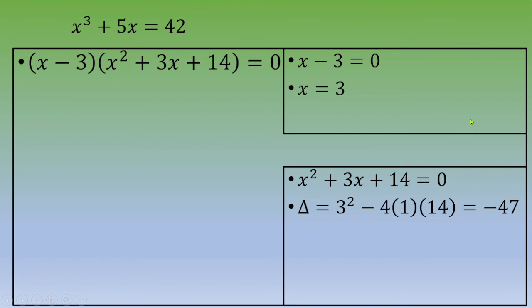When the discriminant is below 0, that means you've got two complex roots. And you can write down these two roots: negative 3 plus or minus i square root of 47, divided by 2.